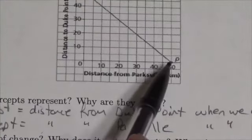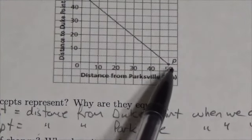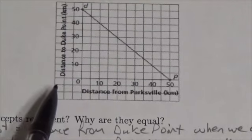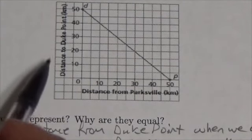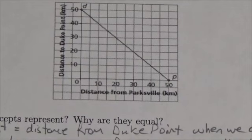Because again, the x value at this point is 50. However, the y coordinate, the dependent variable, is going to be down to zero. And remember, that represents the distance to Duke Point. So we're at Duke Point here.